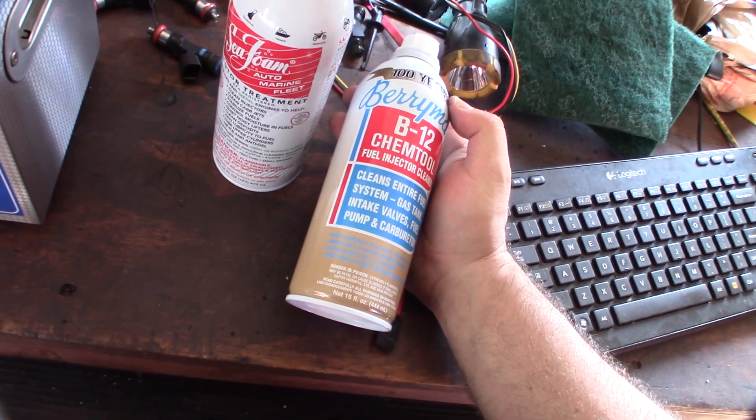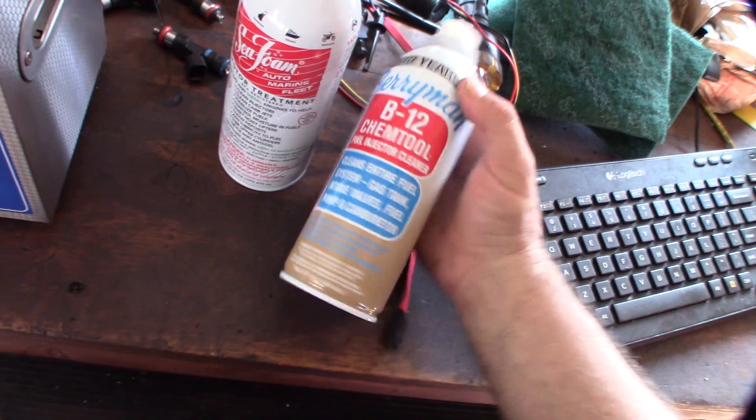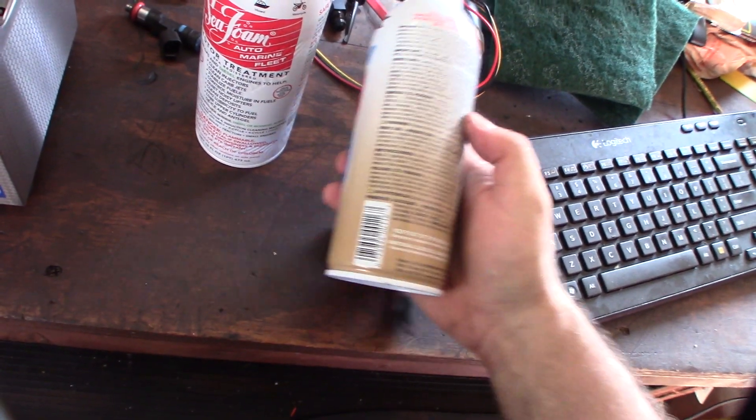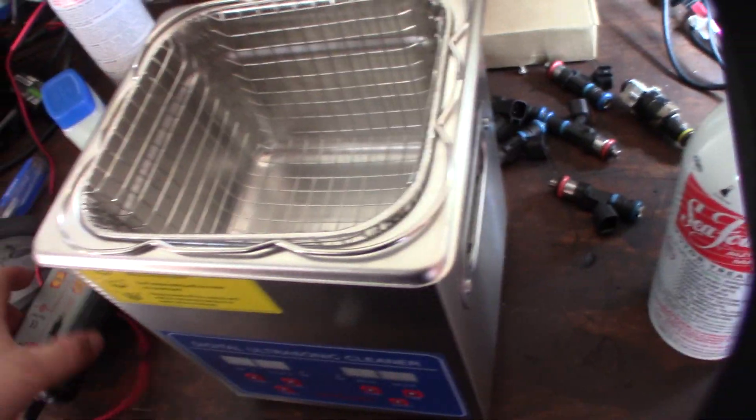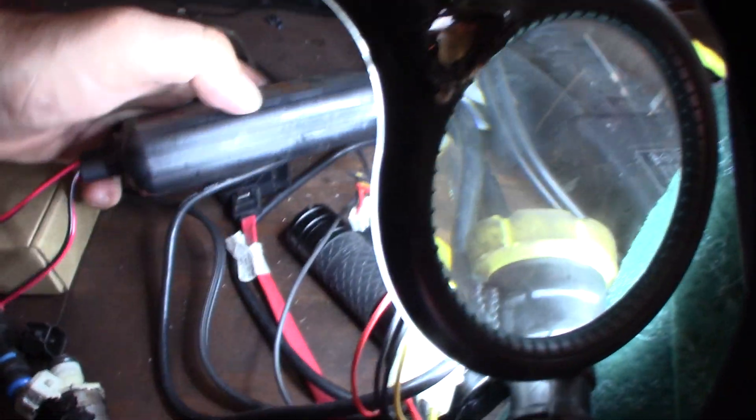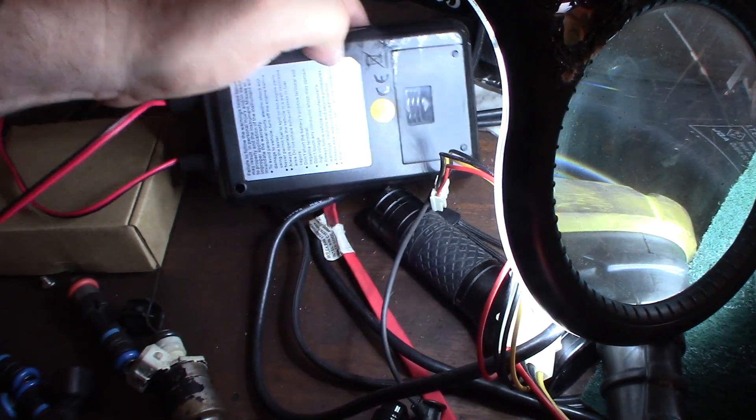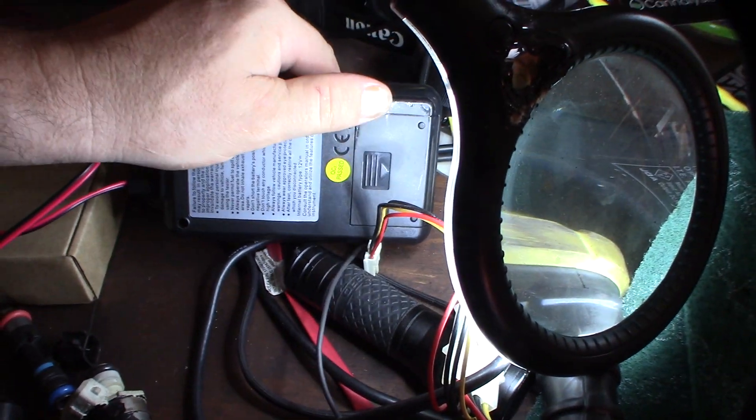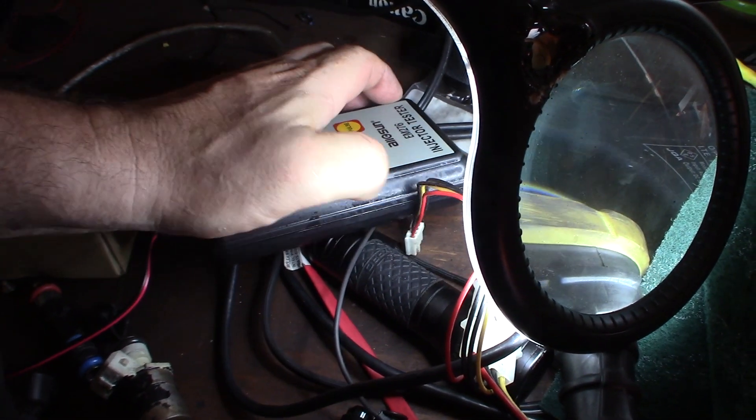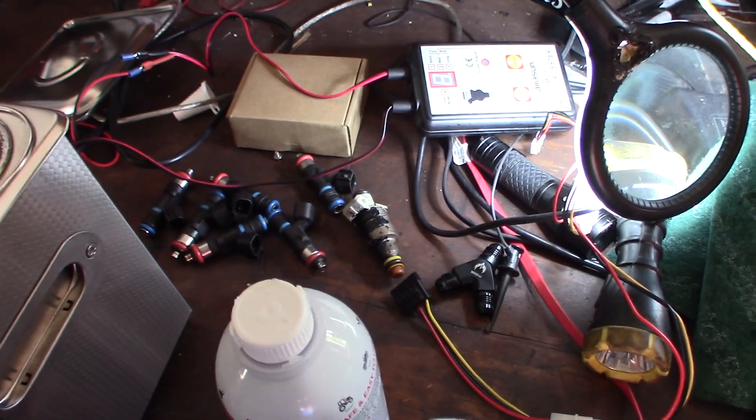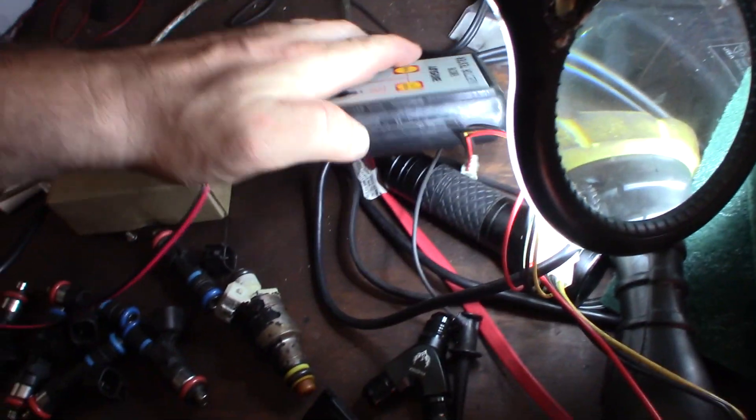I also bought some other stuff on my other injector video, but this B12 Chem-Tool, the Berryman, basically has acetone in it. It smells very harsh and almost deteriorates plastic. See that right there? When I was cleaning my injectors it got on there and almost dissolved the plastic. You gotta be really careful with the Berryman because it dissolves rubber and plastic. I've seen that before with my big can of carb cleaner, the dip carb dip - it dissolves plastic and rubber.